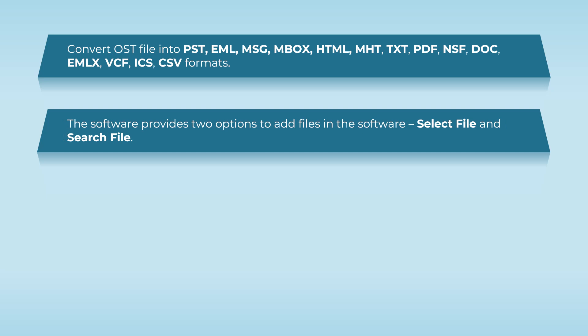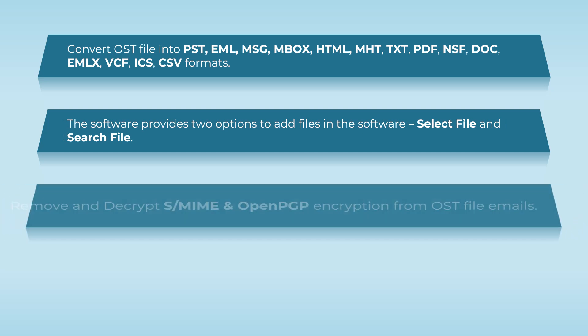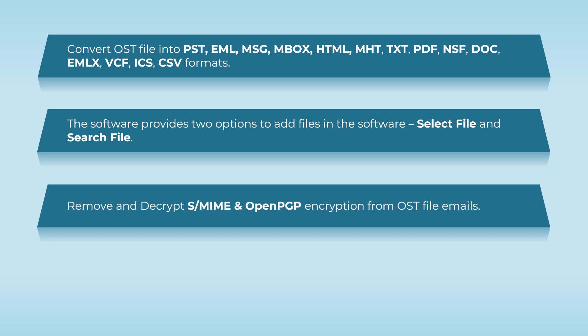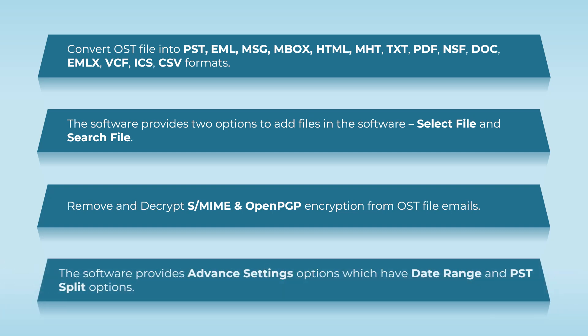The first option is Select File and the second is Search File. If you have an encrypted OST file with S/MIME or OpenPGP encryption, the tool will decrypt that file. The software also provides advanced settings options which include date range and PST split options.